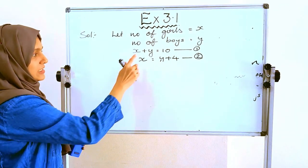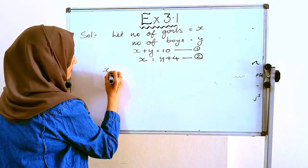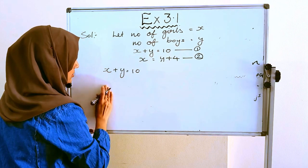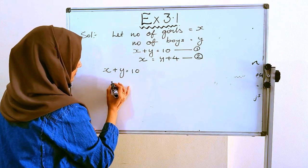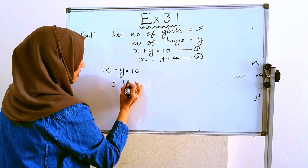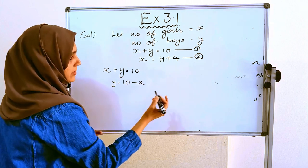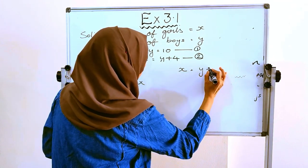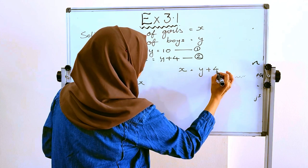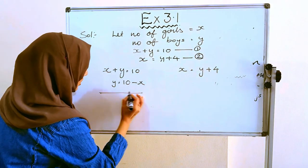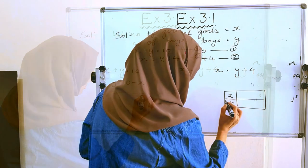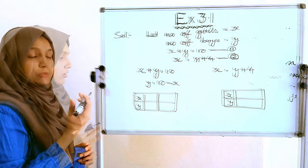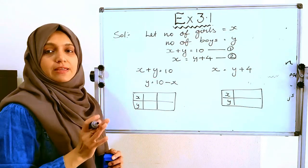For the first case, x plus y equals 10, so y equals 10 minus x. For the second condition, x equals y plus 4. We draw a table and substitute values for x to get integer values for y.